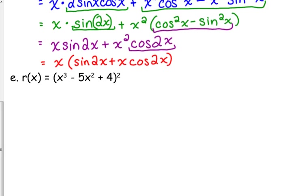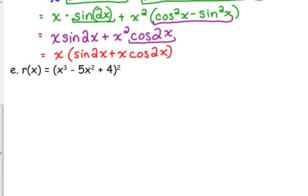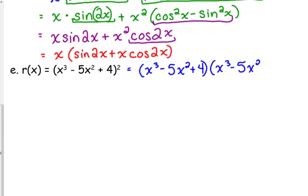Let's step away from trig and look at another polynomial function. Our function is defined as x cubed minus 5x squared plus 4, and that quantity is squared. We can't just apply the squared to all of our terms — that's not how it works. And we can't apply the power rule to this overall expression because there's other stuff inside the parentheses. So when squaring a polynomial expression, we need to multiply that polynomial expression by itself. Now we're looking at a product rule problem. Expressed as x cubed minus 5x squared plus 4 times itself, now it's a product rule.